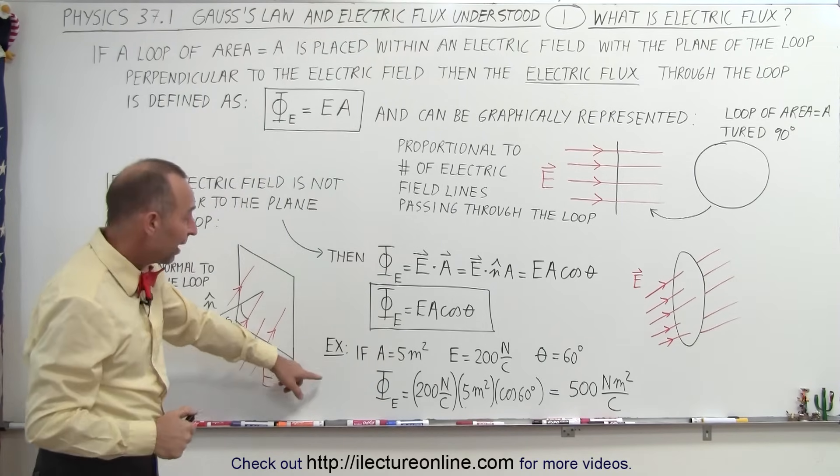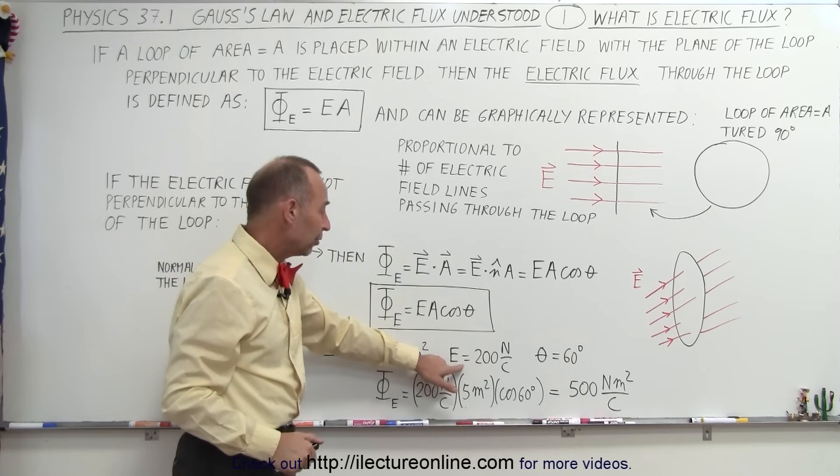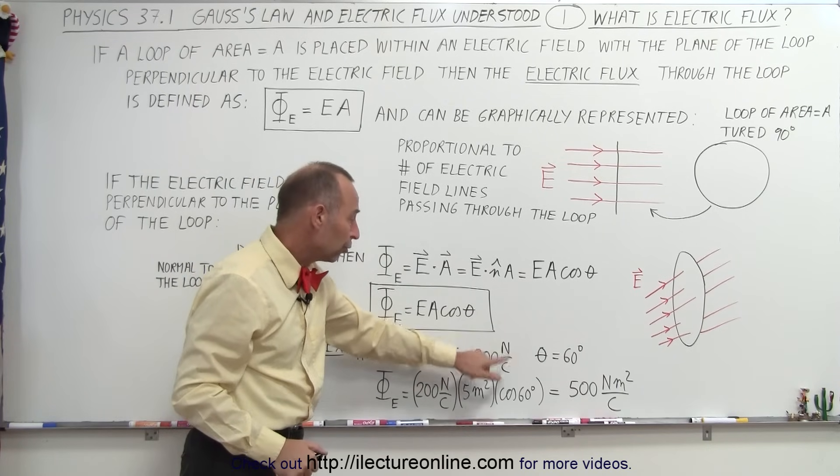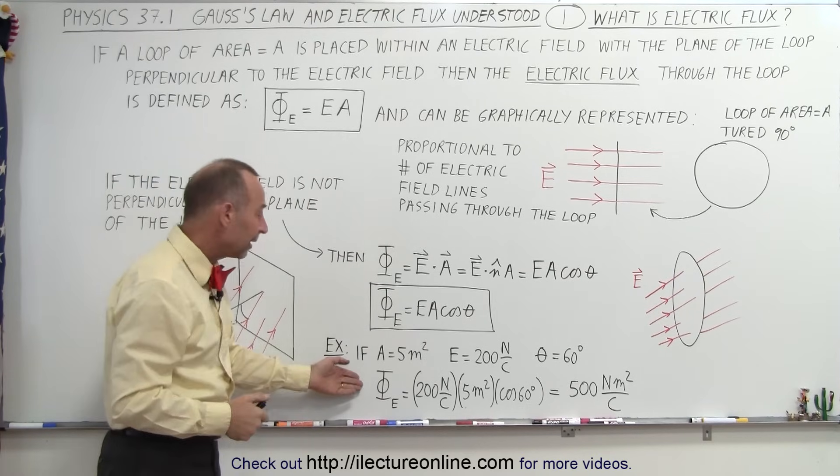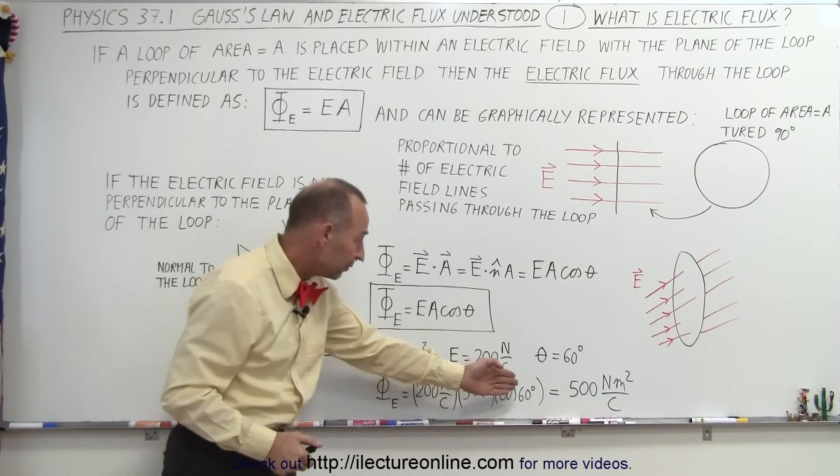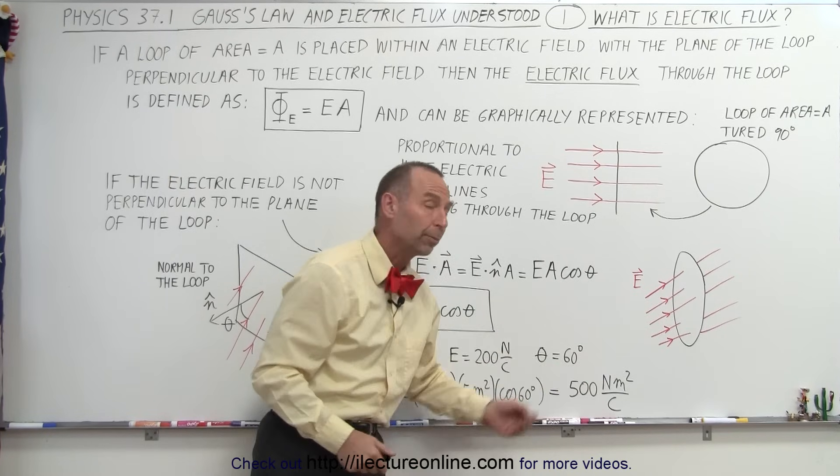A quick example: let's say that we have an area of a loop that's 5 square meters, the magnitude of the electric field is 200 newtons per coulomb, and the angle between the normal and the field is 60 degrees. Then the electric flux will simply be the product of all those.